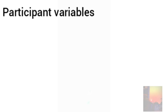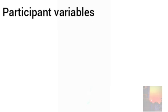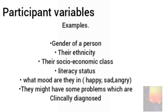The third type of variables are participant variables. Participant variables are related to individual characteristics of how one may respond in an experiment. Examples of participant variables may include gender, age, ethnicity, socioeconomic class, literacy status, mood, clinical diagnosis, etc.